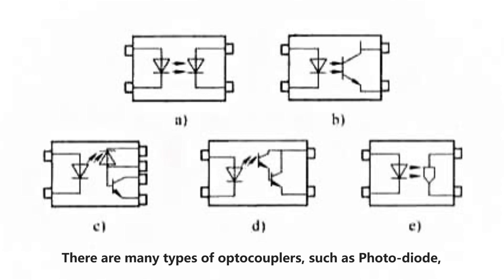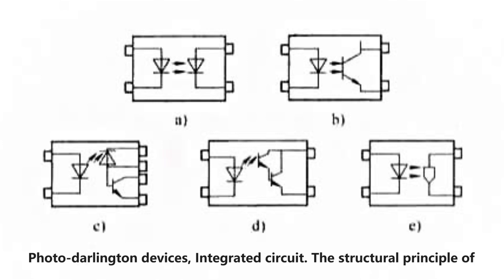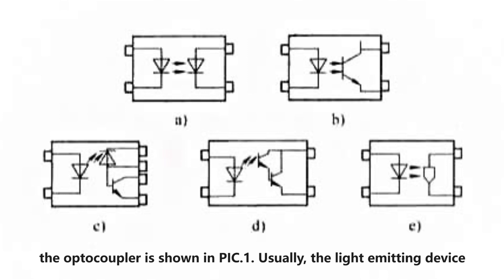There are many types of optocouplers, such as photodiode, phototransistor, photoresistor, light-triggered thyristor, photodarlington devices, and integrated circuit. The structural principle of the optocoupler is shown in PIC-1.